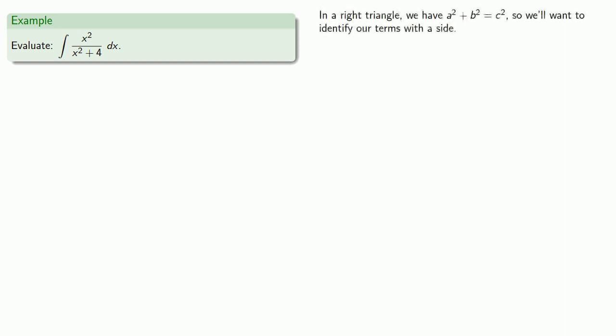In a right triangle, we have a squared plus b squared equals c squared, where a, b, and c are the lengths of the sides. We'll want to identify our terms with the sides of a triangle. We might note that x squared is x squared, and 4 is 2 squared, so we'll take a right triangle with sides x and 2.